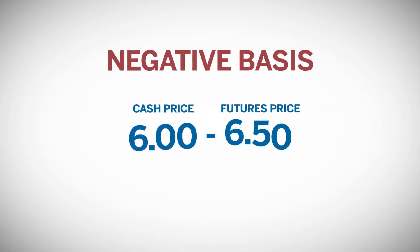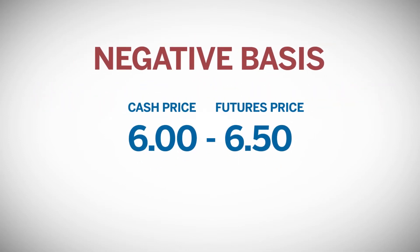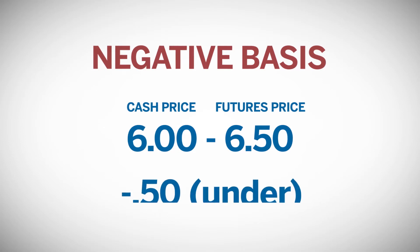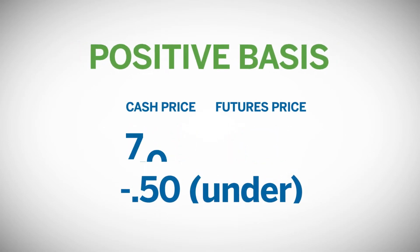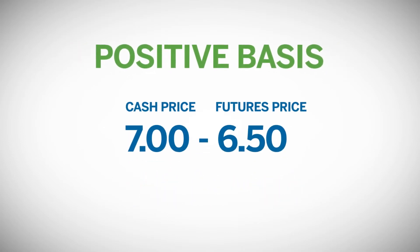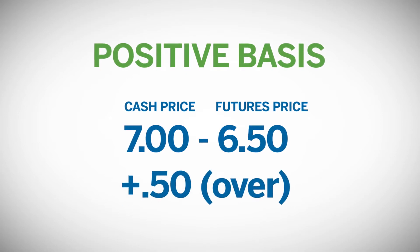A negative basis is referred to as being under — in other words, the cash price is under the futures price. And a positive basis is referred to as being over — that is, the cash price is over the futures price.